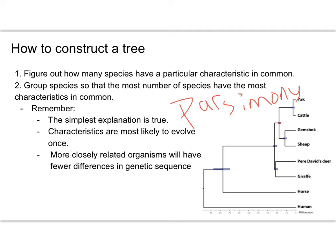More closely related organisms will have fewer differences in genetic sequence. That would make sense—if they have similar characteristics, that means they need to have similar DNA that will code for those characteristics.